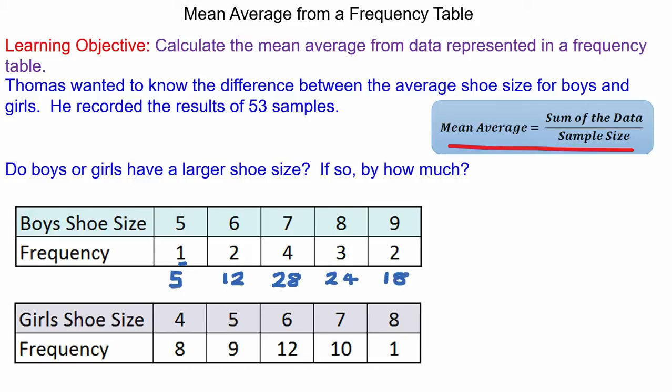So the total shoe size of all the boys would be eighty-seven. So that is the sum of all the total shoe sizes and the mean average is the sum of the data divided by the sample size.